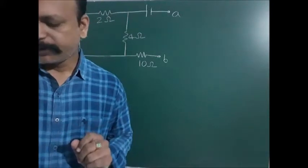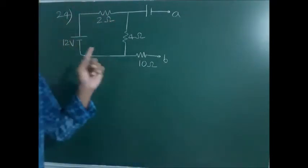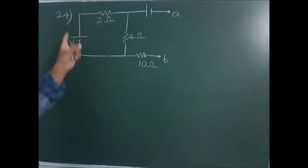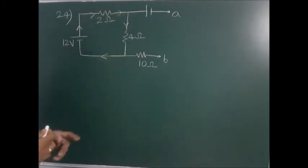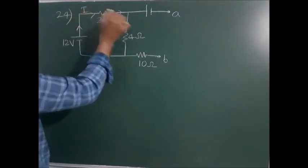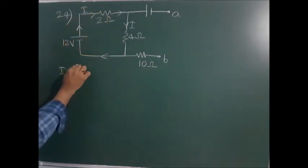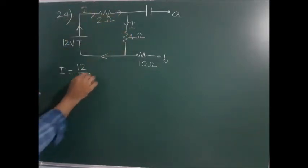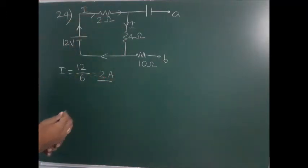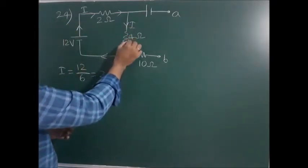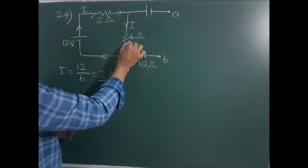Question 24: Find the potential difference between points A and B (VB - VA). The circuit is a closed loop. The current in this circuit is total voltage by total resistance: 12 V divided by (2 + 4) ohms = 2 amperes. Across the 4-ohm resistance, voltage is 2 × 4 = 8 volts.